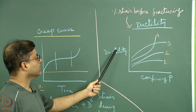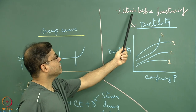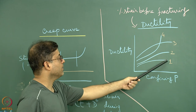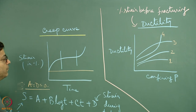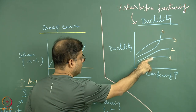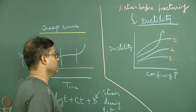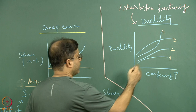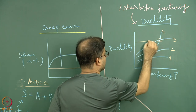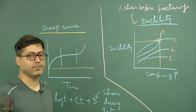Ductility is defined as the percentage strain before fracturing of a solid. For four rock types, ductility increases non-linearly with increasing confining pressure. Additionally, two different rock types can reach the same ductility value at a certain confining pressure.